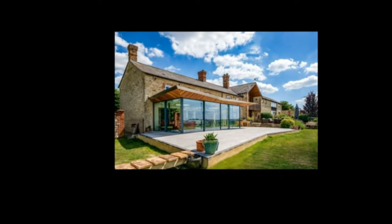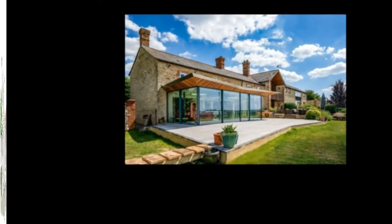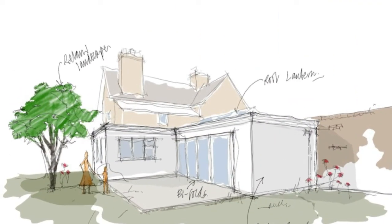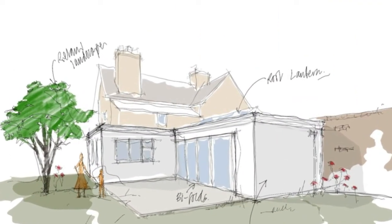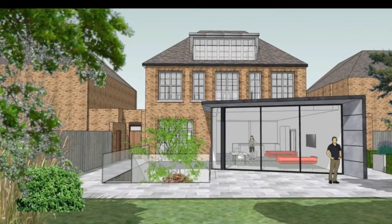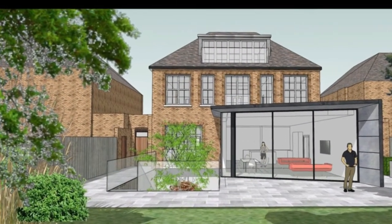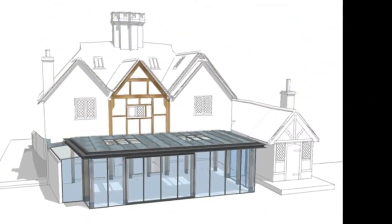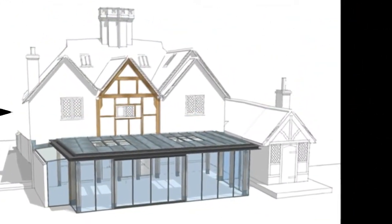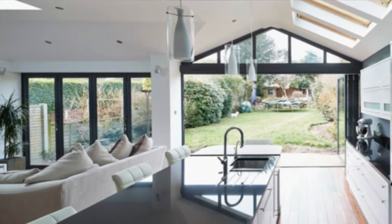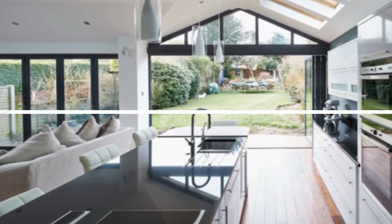Once we have planning approval, we will need to prepare building regulation drawings. For this phase, we will teach you how to create detailed drawings and detailed sections for foundations, floors, roofs, electrical, heating, drainage, and everything else you need to get approval from building control.